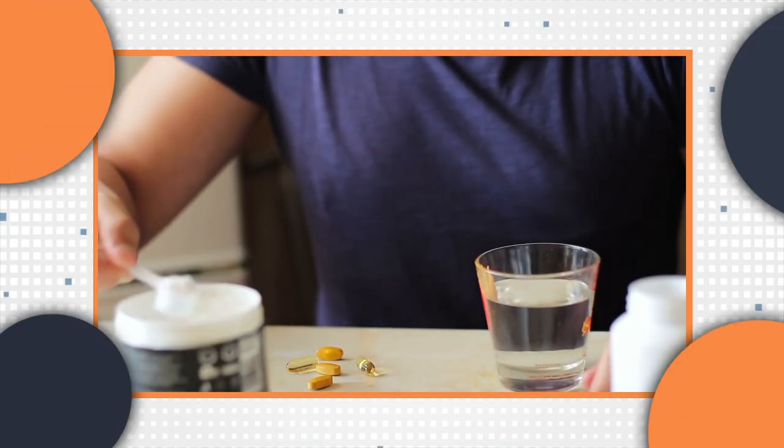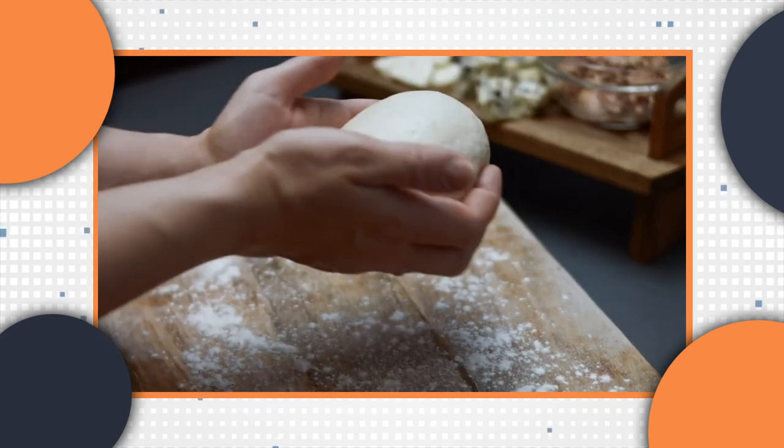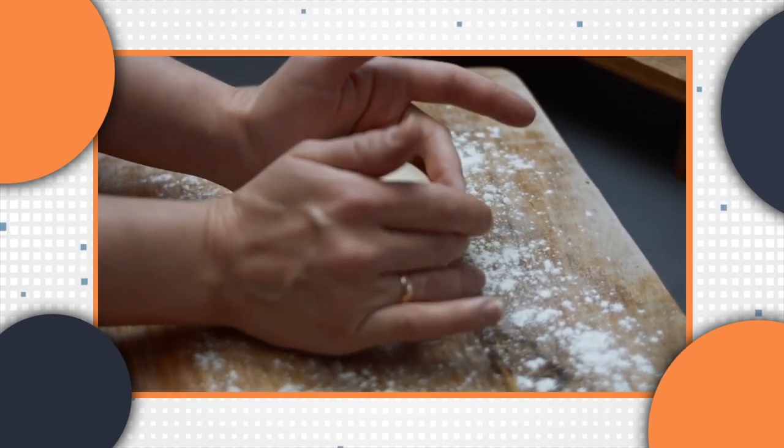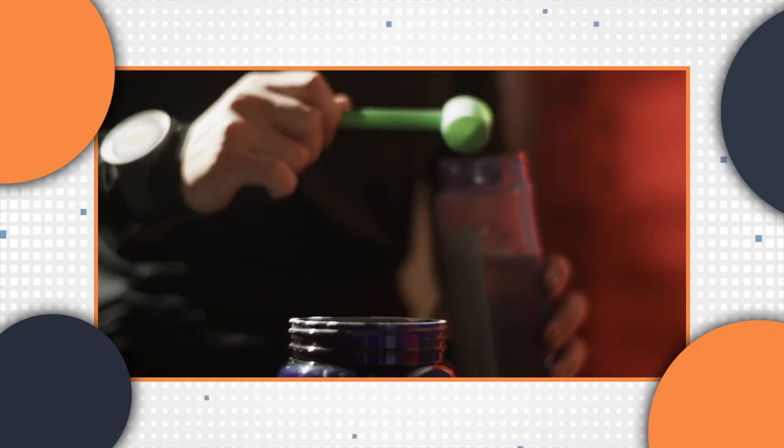But protein powder isn't just for shakes, you can also use it to make high protein versions of your favorite foods. Try adding protein powder to pancake or waffle batter for a tasty and nutritious breakfast. And if you're looking to bulk up, consider adding some natural peanut butter or dried peanut butter powder to your protein shake.